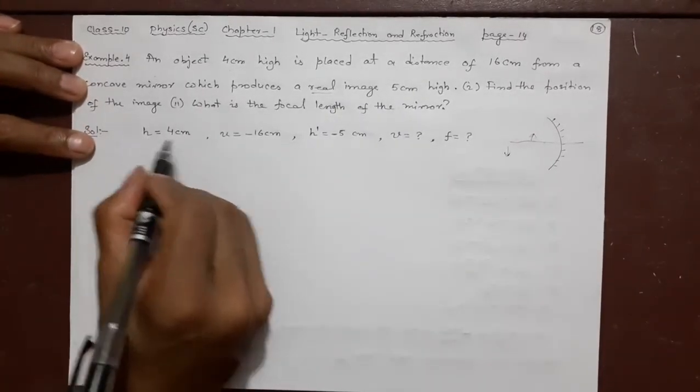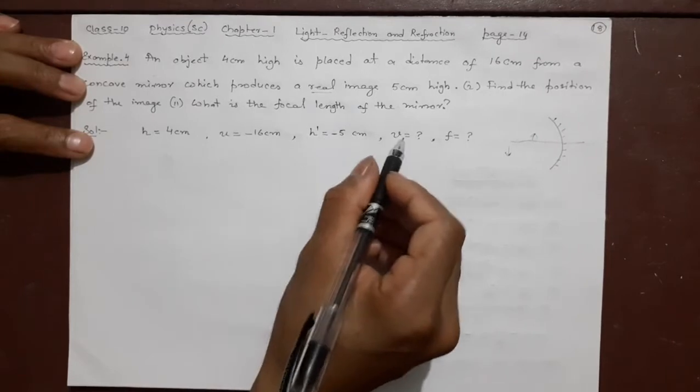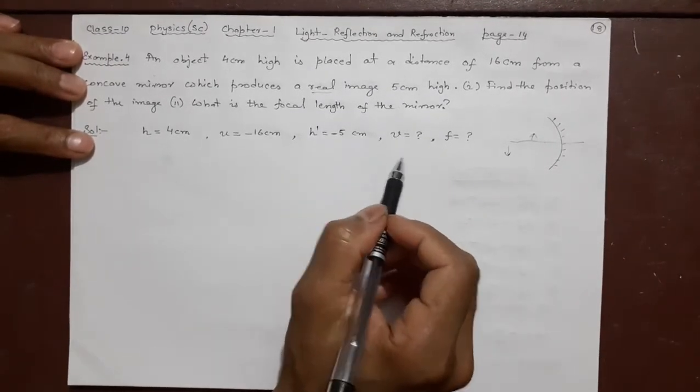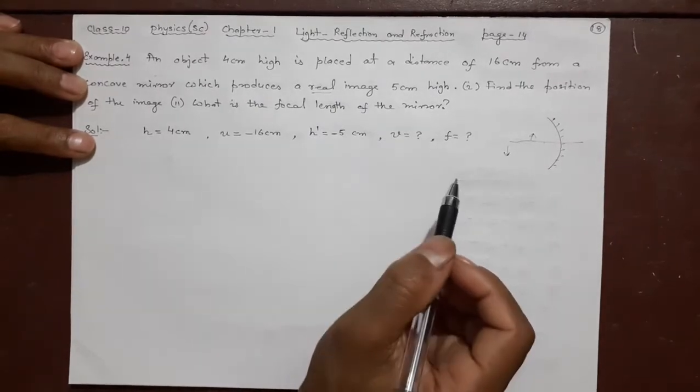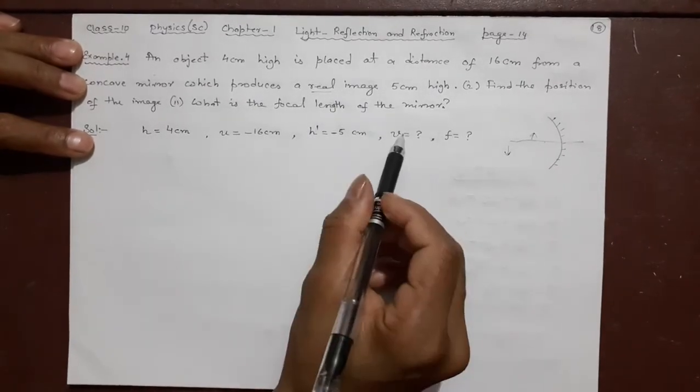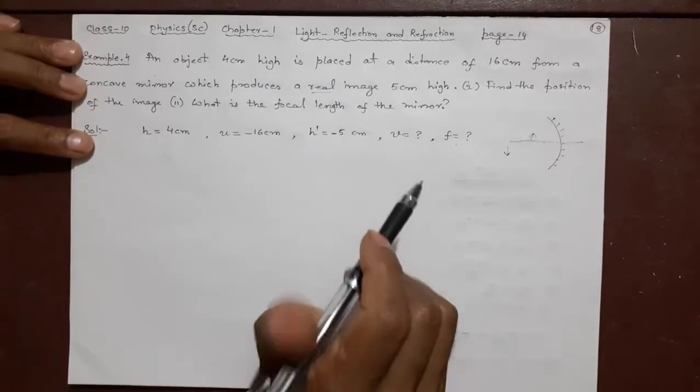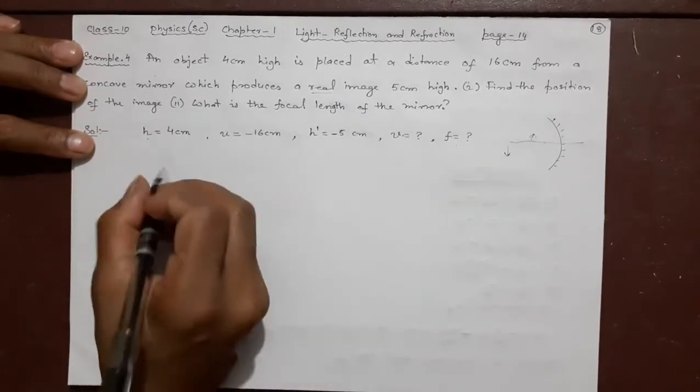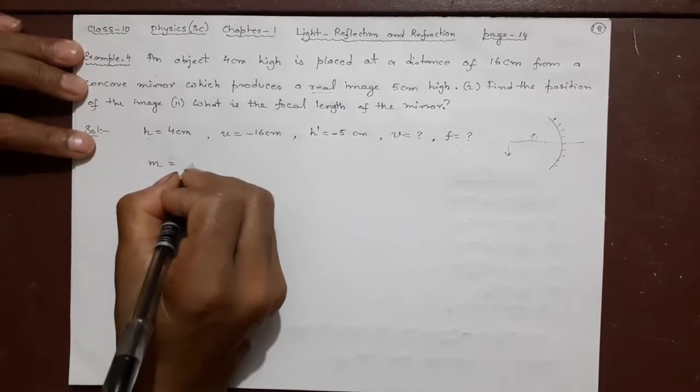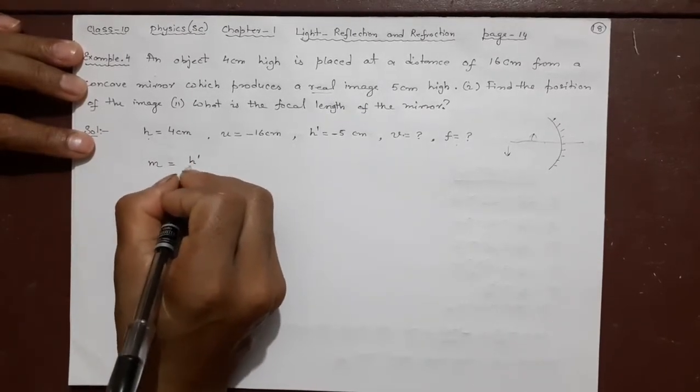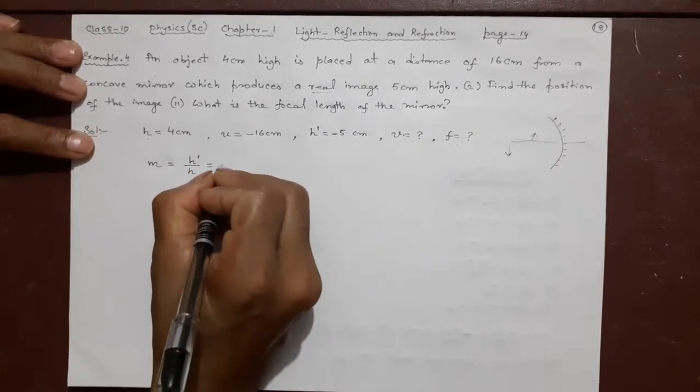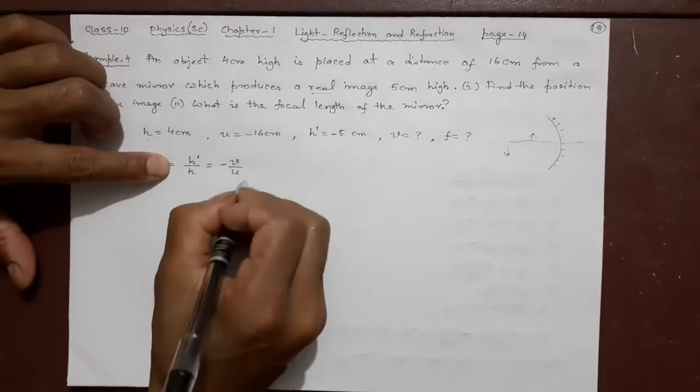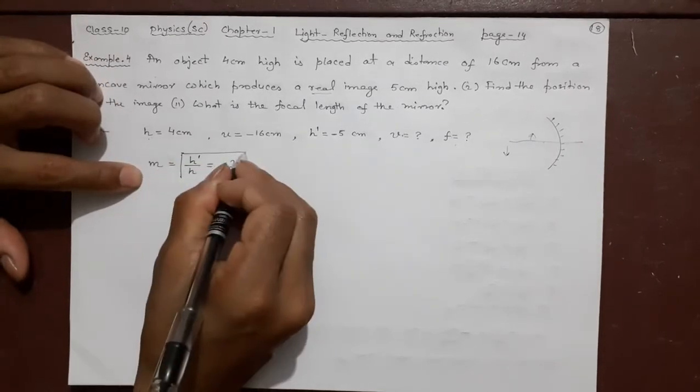Let's proceed. So what is the connection between this, this, this and this? You cannot find V and F together in one formula because if you use 1 by F equal to 1 by U plus 1 by V, two unknowns will be there. So don't use that. So you use where these two will help you. What is that? M is equal to H dash by H equal to minus V by U. So this is not given, so don't use this. You use this part.